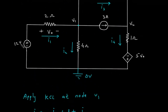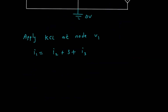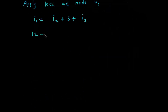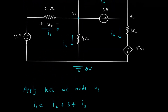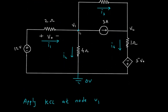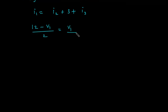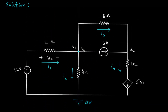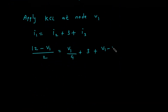I1 is equal to (12 minus V1) divided by 2. So: (12 minus V1)/2 equals I2 plus 3 plus I3, where I2 is V1/4 and I3 is (V1 minus V2)/8.